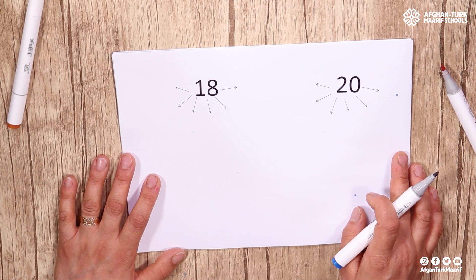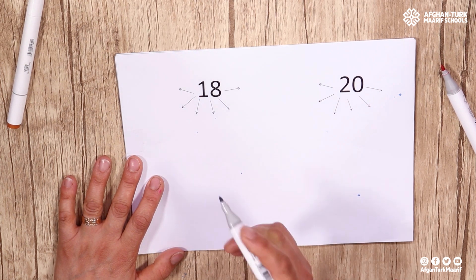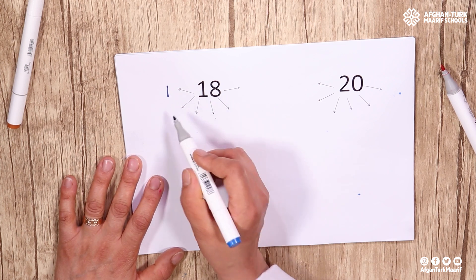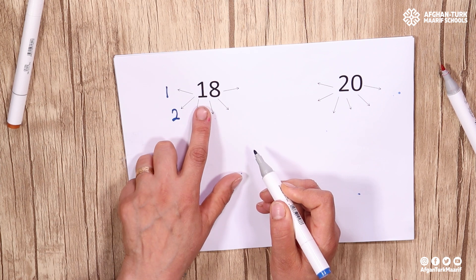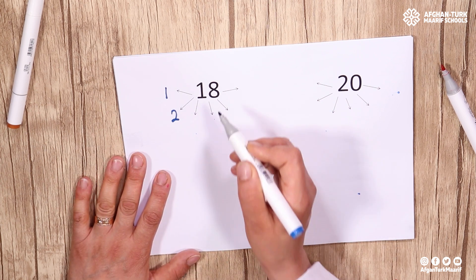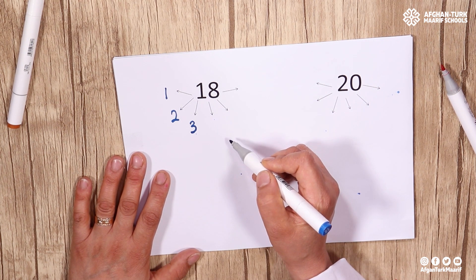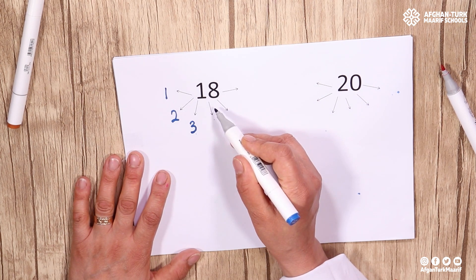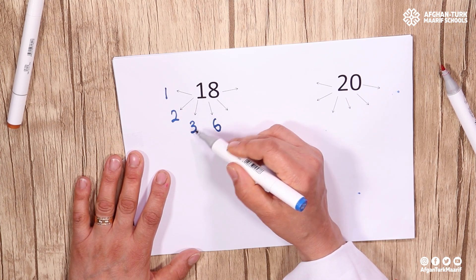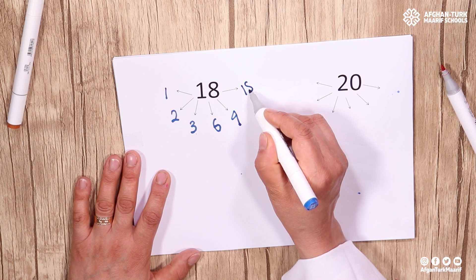Let's go to the next example. Here we have another pair of numbers: 18 and 20. How can we find the factors of these numbers? For 18: the first factor is 1. The last digit is 8, an even number, so it's divisible by 2. The sum of digits 1 plus 8 equals 9, and 9 is divisible by 3, so 18 is also divisible by 3. It's not divisible by 4 or 5, but it's divisible by 6. It's also divisible by 9. The last factor is 18 itself.